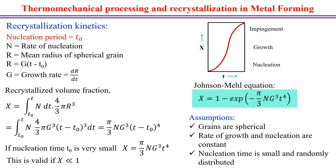Recrystallization kinetics can be described by the recrystallization fraction — measuring how much of the old deformed grain has been converted to new recrystallized grain. For example, a 50% recrystallization fraction means 50% of the area has been converted to new recrystallized grain, with the remaining 50% still being old deformed grain.